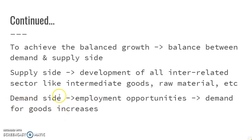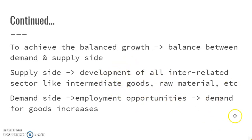Coming to the demand side, it will relate to the provision of employment opportunities. If employment opportunities are available in the economy, income will increase. What will people do? They will demand goods — demand for goods will increase. Hence, the demand side will be supported. It is related to consumer goods industries, especially the agriculture and manufacturing industries.